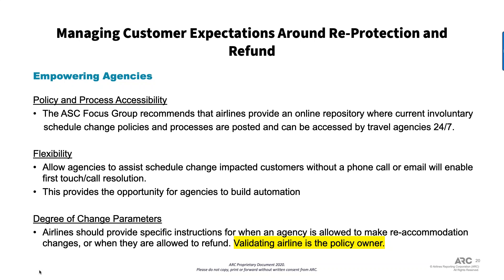This is not proprietary information necessarily — it's information to help agencies manage the problems happening within the airline. Some airlines are doing a great job of it, others are not, and we would like everyone to move toward this type of online capability for agencies to access. Regarding flexibility, there are airlines that require you to make a phone call or send an email to get resolution to a schedule change or IROP involving another carrier or downline partner — this really hampers the agency's ability to build automation and the time it takes to wait on hold.